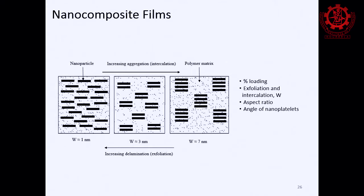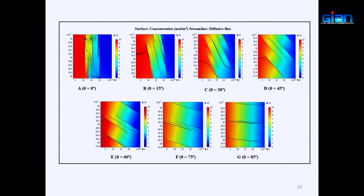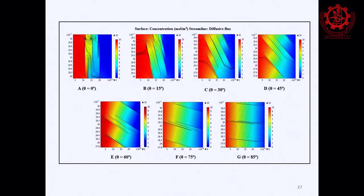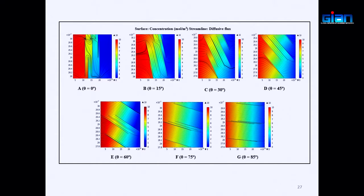Another challenge is orientation. If you have a really long barrel, it allows the nanoplatelets to align in the direction of flow rather than remaining vertical. Horizontal alignment is more stable. However, you need sufficient residence time in the extruder for them to align, which increases production cost due to reduced throughput. This is why commercially available nanocomposite films with very high barrier properties remain elusive.